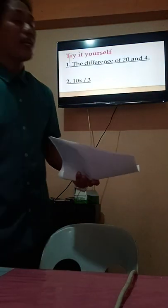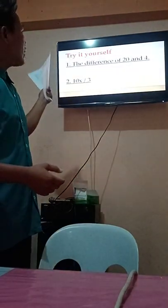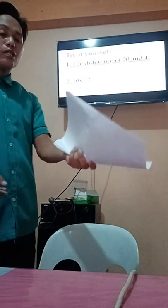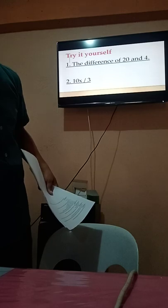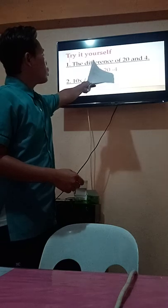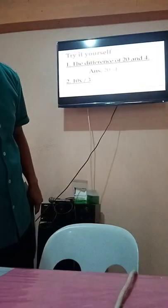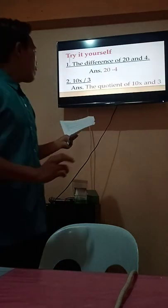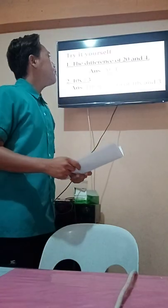Now let's try it yourself. How would you mathematically express these verbal phrases? Yes, Beth? Very good — the answer is 20 minus 4. That is the mathematical expression for that verbal phrase. How about number 2 — what is the verbal phrase for that mathematical expression? Very good — the verbal phrase is the quotient of 10X and 3.